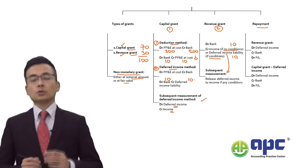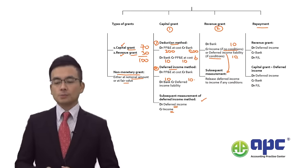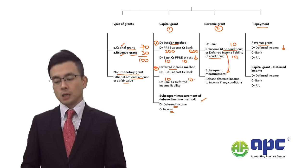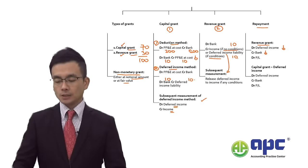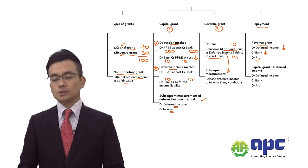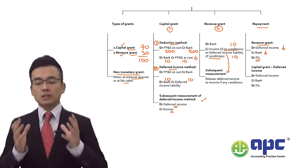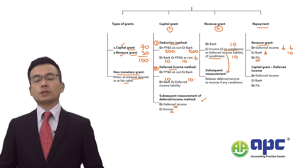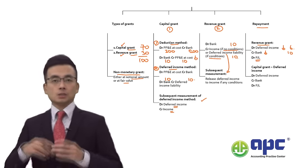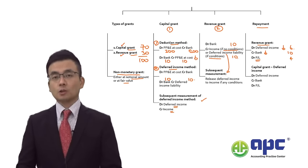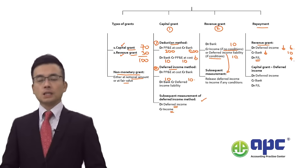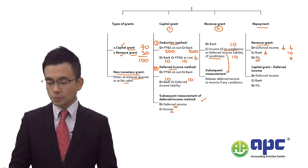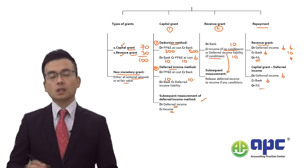For repayment — when you don't fulfill conditions and must repay — for the revenue grant, remove the remaining deferred income liability and credit bank to repay the money, with the balancing figure recorded as a loss in P&L. For example, if you must repay $10 but have already recognized $4 as income, the remaining deferred income is $6 but you pay $10, resulting in a $4 loss. For capital grants, similarly reduce the deferred income liability, reduce bank, and put the balancing figure into P&L.